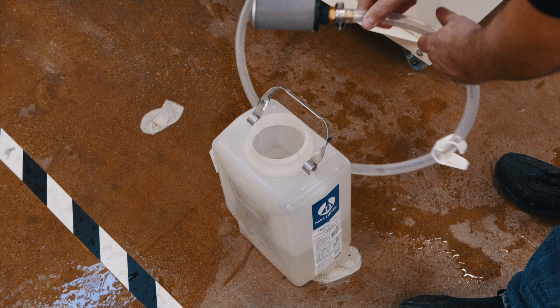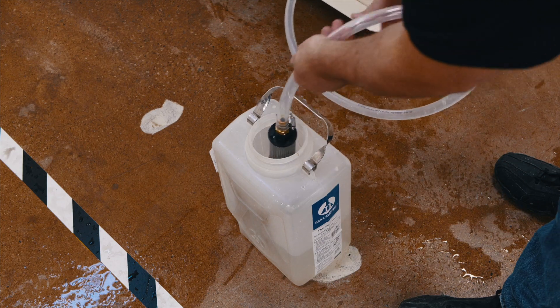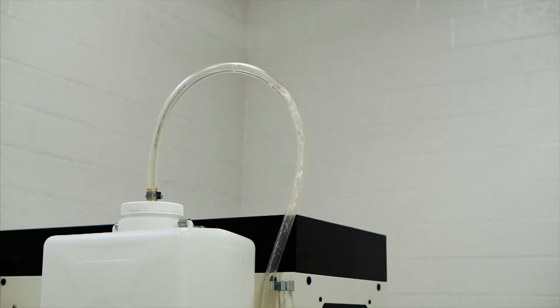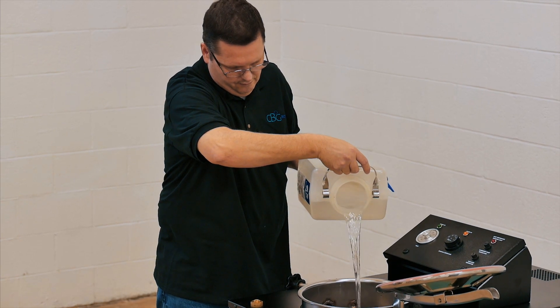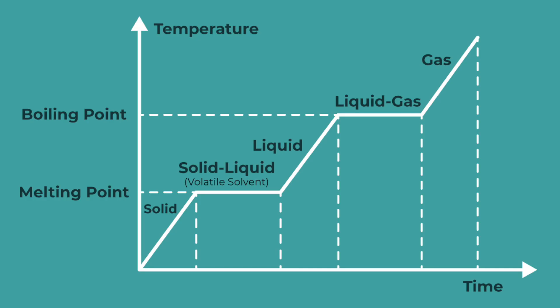As it relates to distillation, essentially the principle is to separate a liquid from a mixture. The liquid is separated based on the boiling point of a given liquid. The boiling point correlates to vapor, so when that particular liquid at a given heat temperature will phase change or convert from liquid to gas.